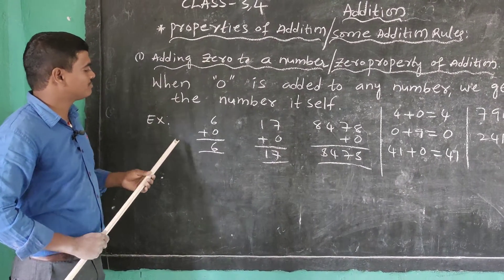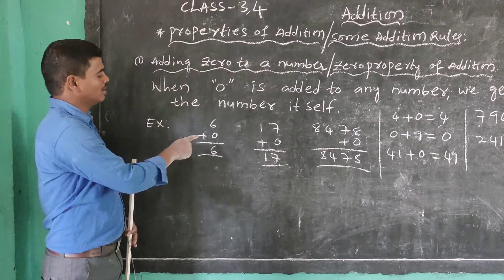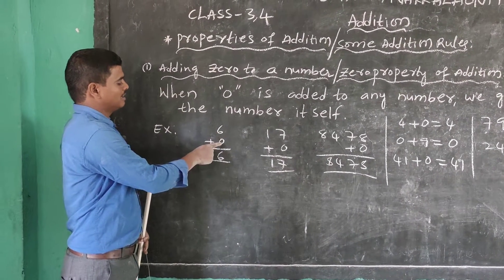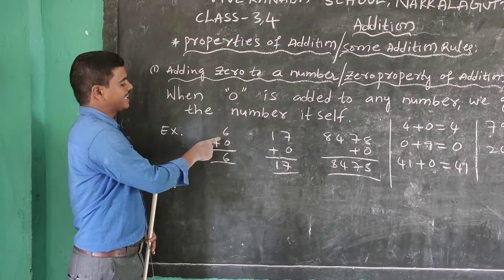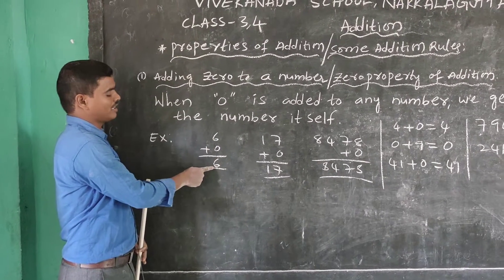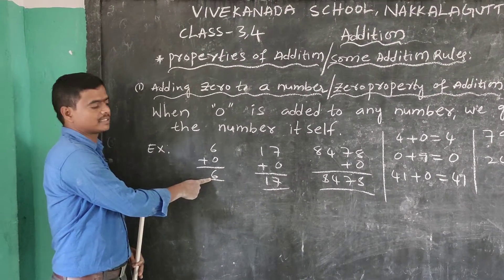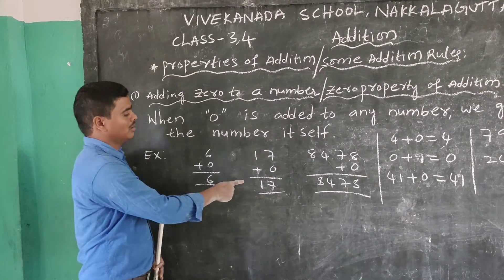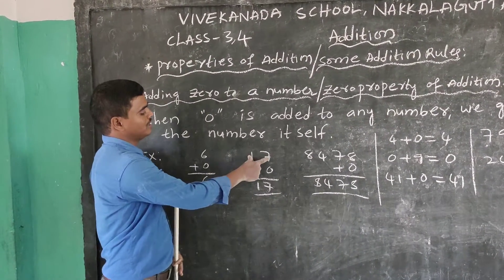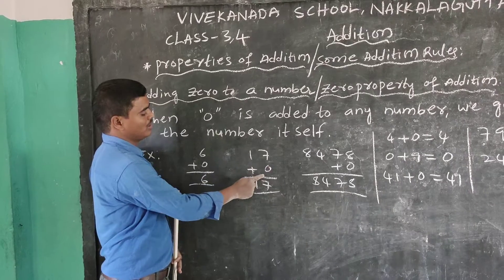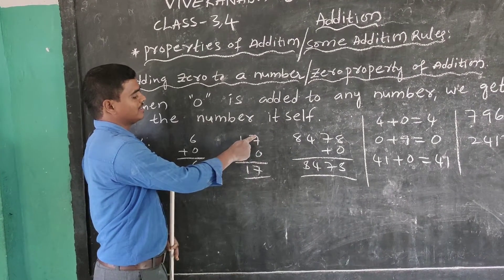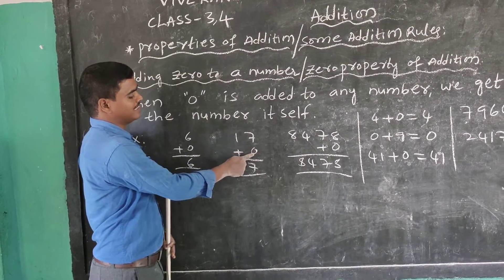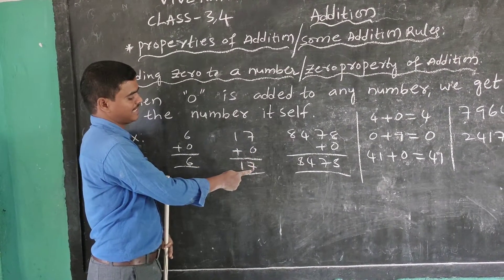Here are some examples. 0 plus 6, or 6 plus 0, is equal to 6. Next: 0 plus 7, or 7 plus 0, equals 7.